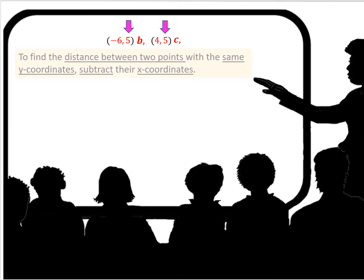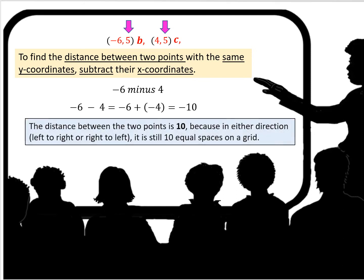So here we have the coordinates for B and the coordinates for C. To find the distance between two points with the same y-coordinates, which is what we have here, we're going to subtract their x-coordinates. X-coordinates are negative 6 and 4. Negative 6 minus 4 is equal to negative 6 plus negative 4, which equals negative 10. Now the distance between the two points would be positive 10, because in either direction, left or right or right to left, it's still 10 equal spaces on a grid.